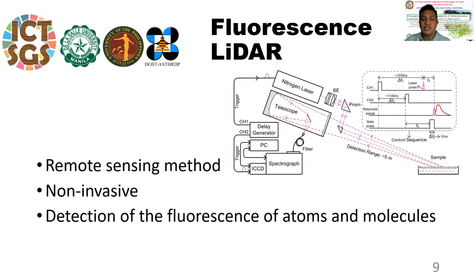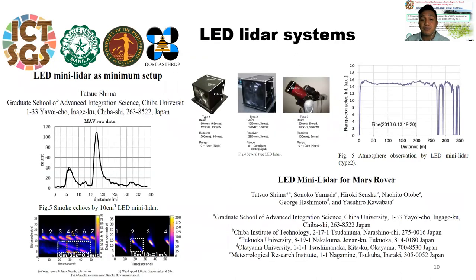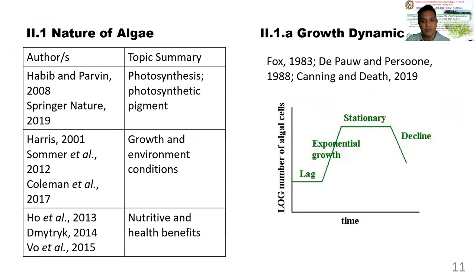We plan to use a remote sensing method, which is non-invasive, to detect the fluorescence of atoms and molecules in algae, specifically for chlorophyll A. Most LED LiDAR systems are used for atmospheric applications and lately for Mars rover applications. With its portability and ability to conduct real-time monitoring at low cost, we aim to design a different LED LiDAR system focused on coastal monitoring. According to the literature, there are several growth dynamics of algae — from lag, exponential growth, stationarity, to the decline phase — and we aim to show this using the developed Pulse LED LiDAR signal.